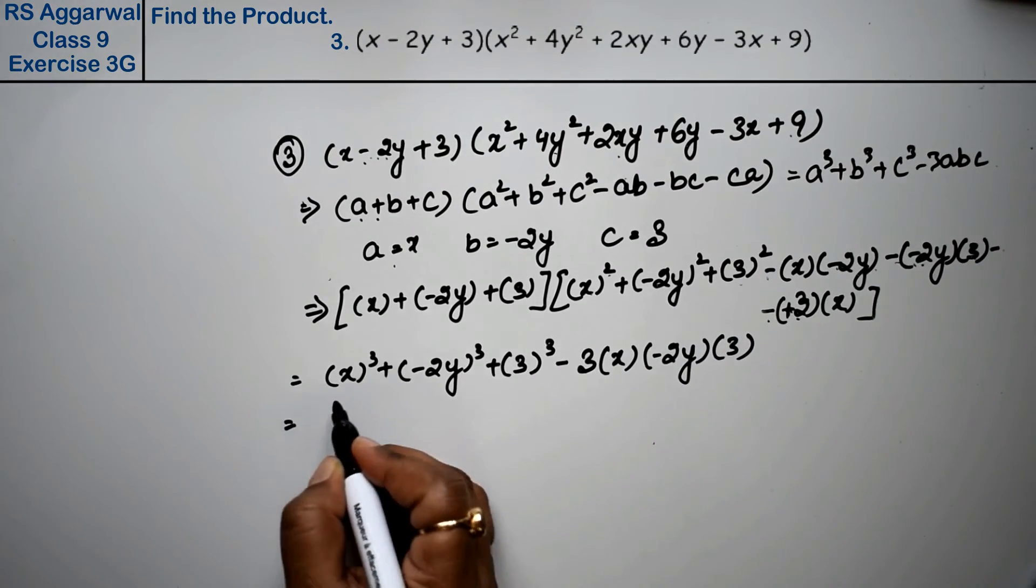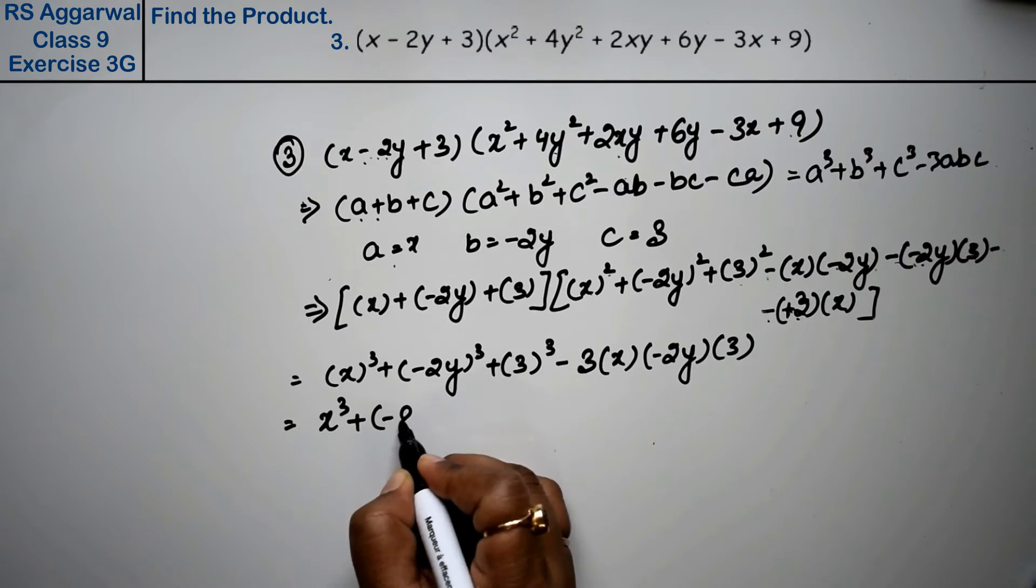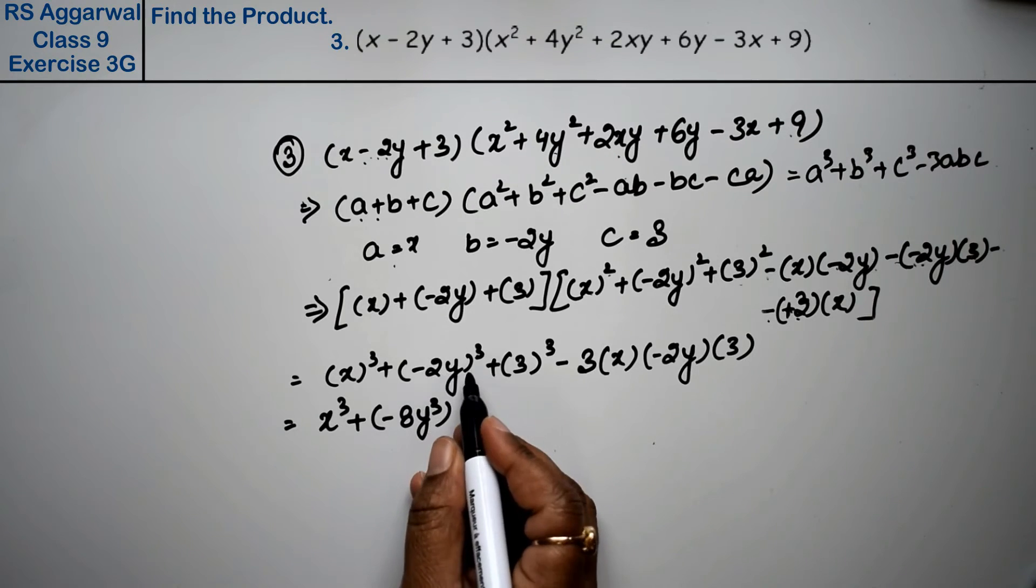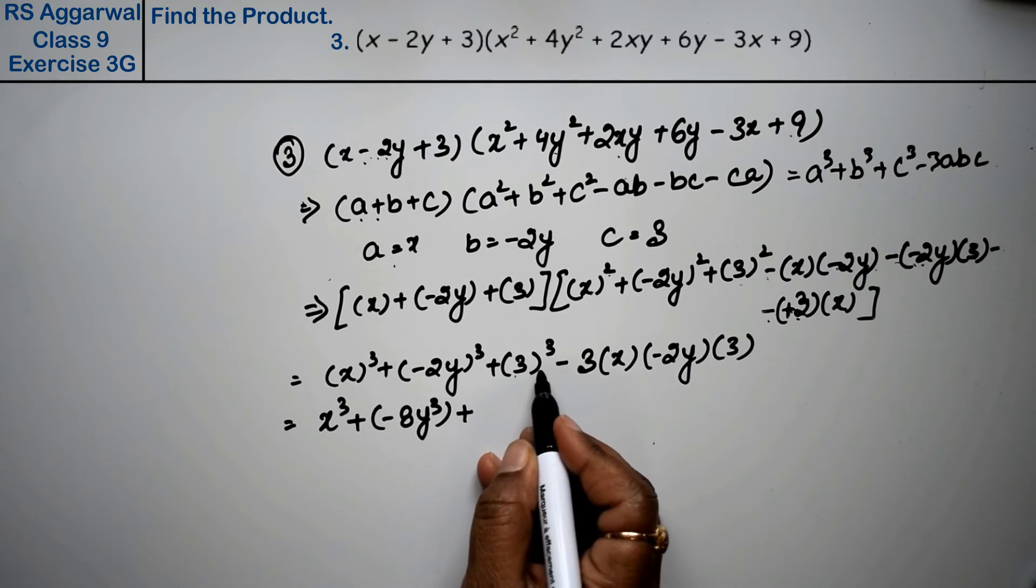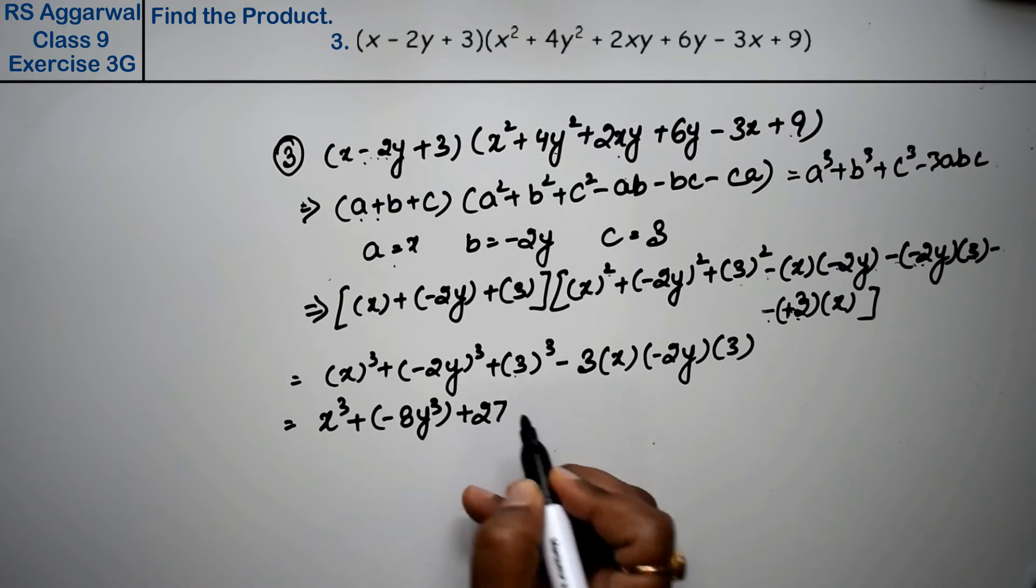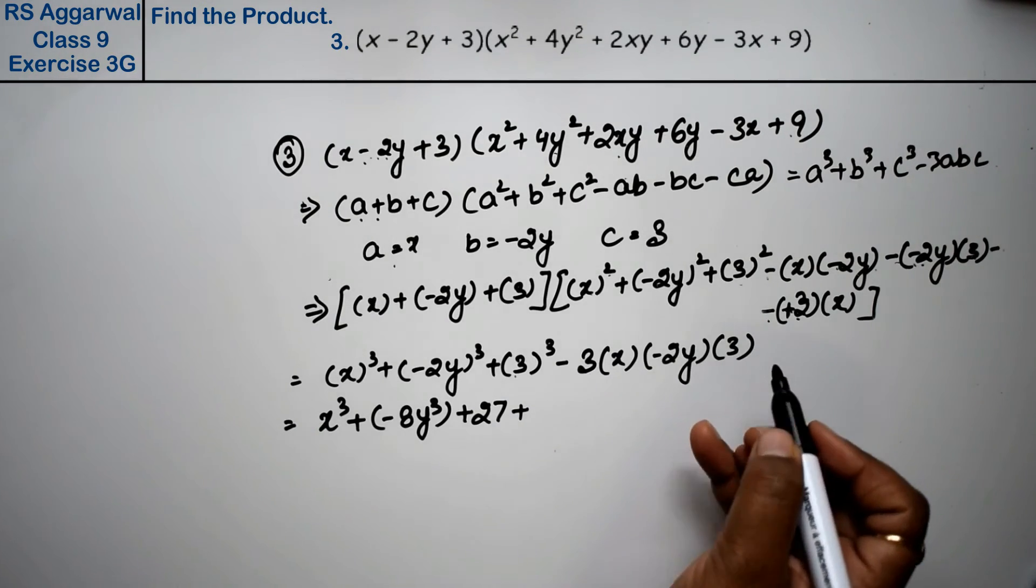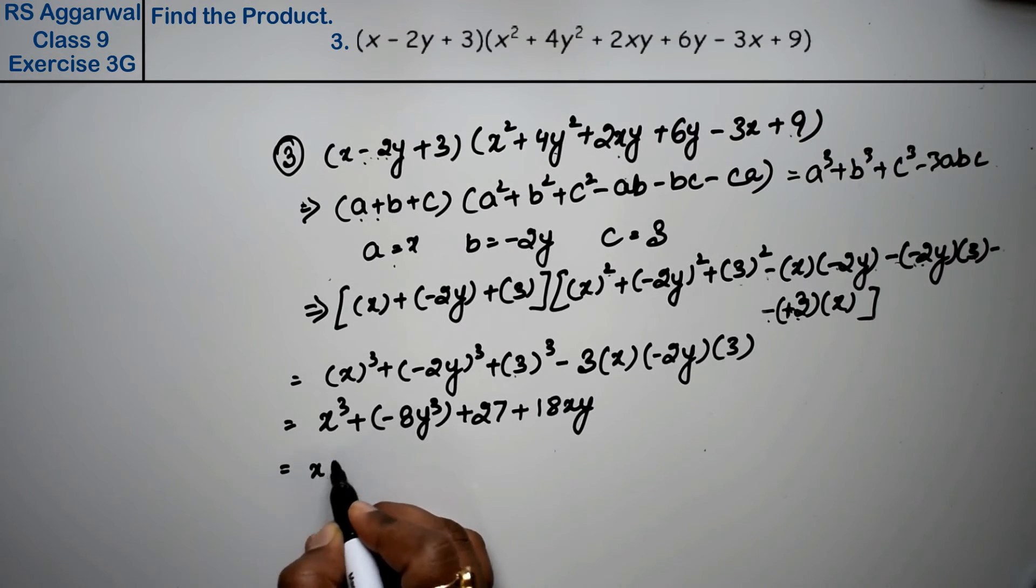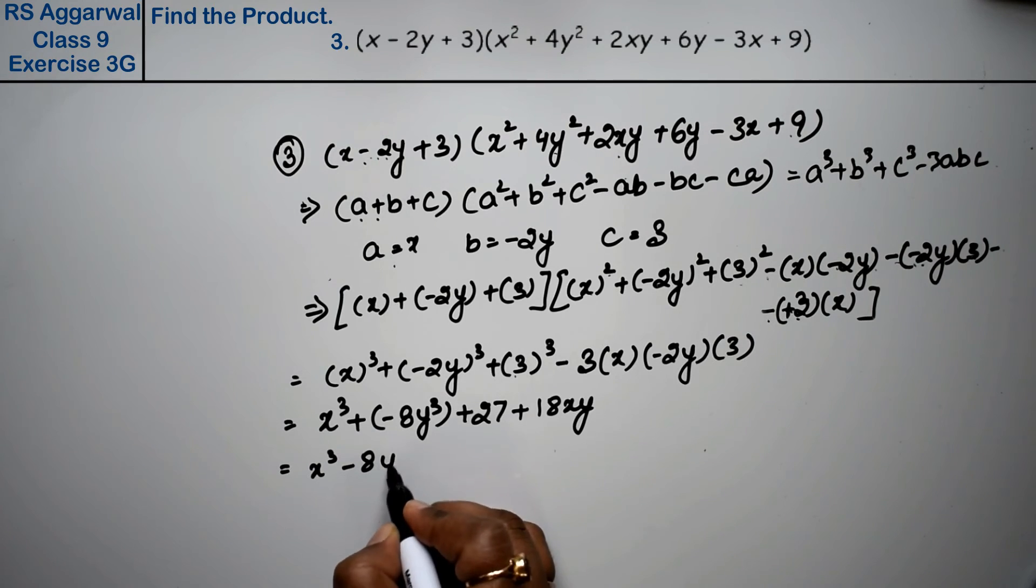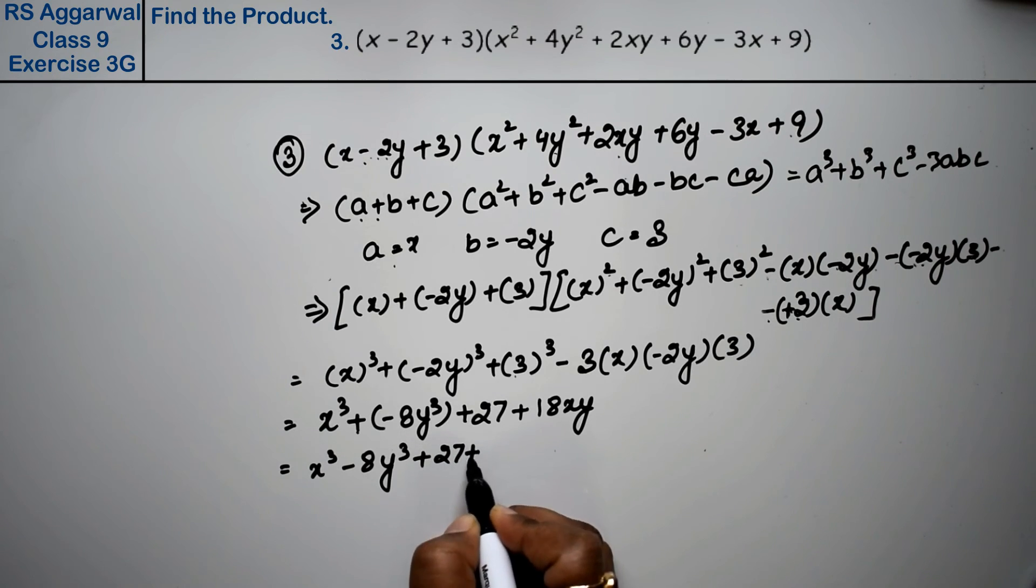x³ raised to odd power gives the negative value, so -8y³ (2×2×2 = 8). Plus 3³ = 27. Minus×minus = plus, so 3×2×3 = 18xy. So the answer is x³ - 8y³ + 27 + 18xy.